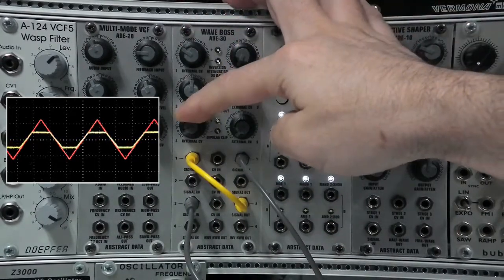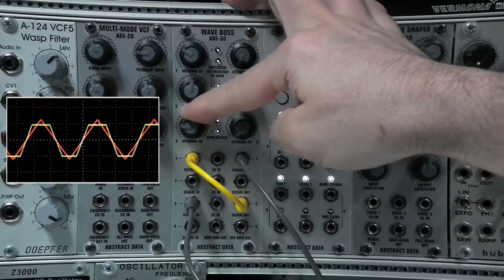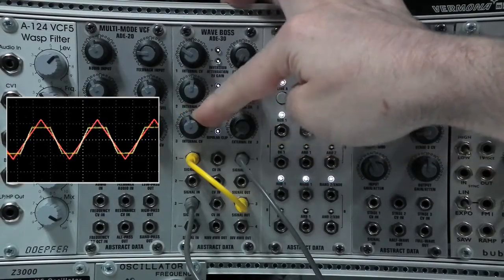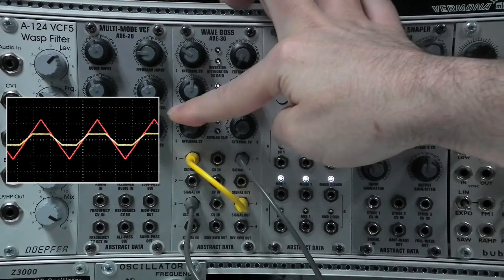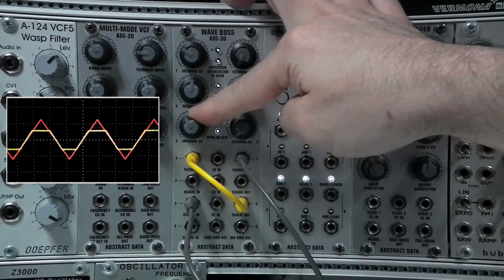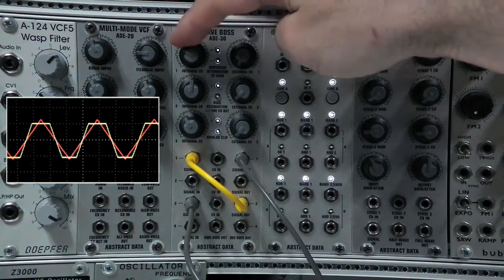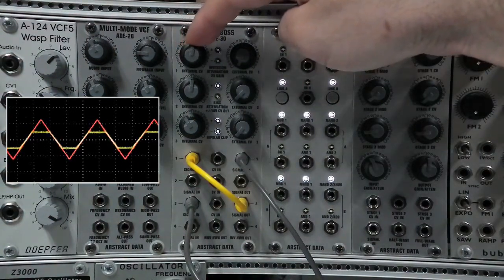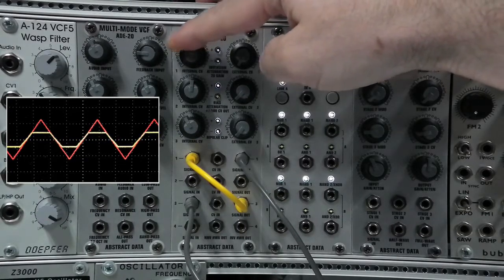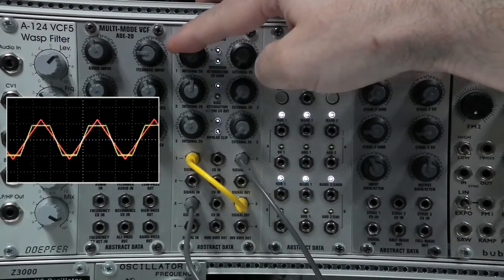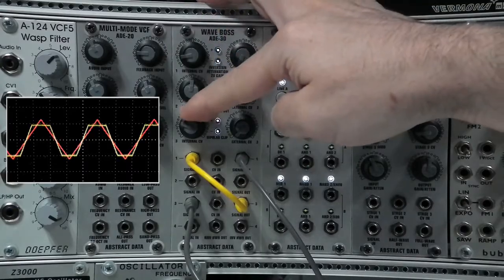Now when I clip the waveform in stage three I'm going to gain compensate using stage one. I've got unity gain there on the scope as I increase and decrease the clipping using stage three. As I control stage one up here I can invert the signal and gain it. I can also increase the clipping so now I've basically got voltage control and manual control over both of these two stages.